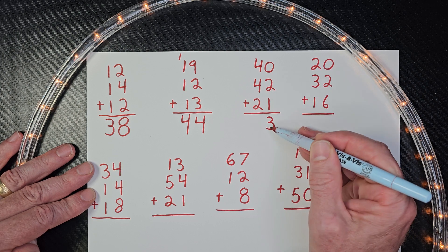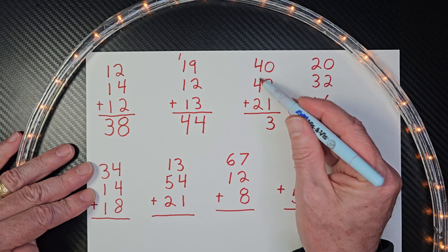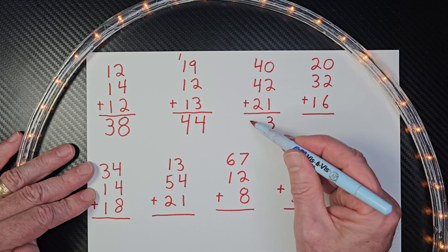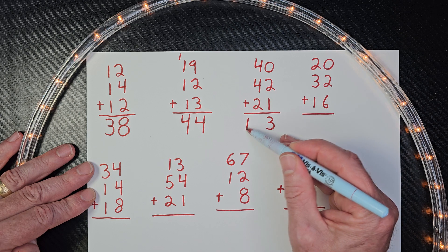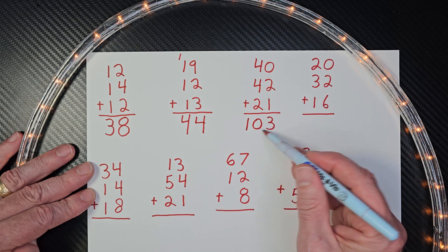Put the three right here and then add the tens. Four plus four is eight. Eight plus two is ten. And that's okay if you have a two-digit number that you're putting right here. So the answer would be 103.